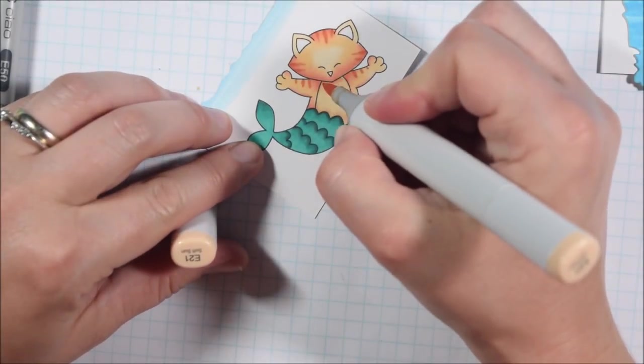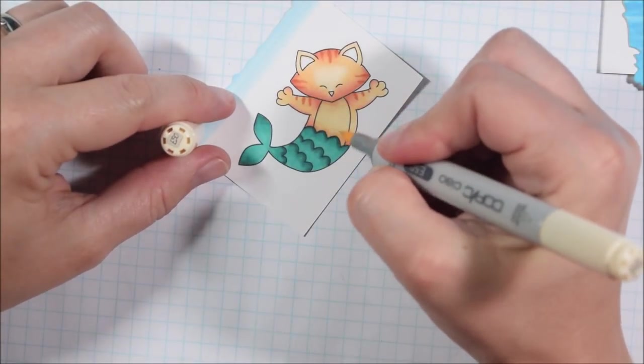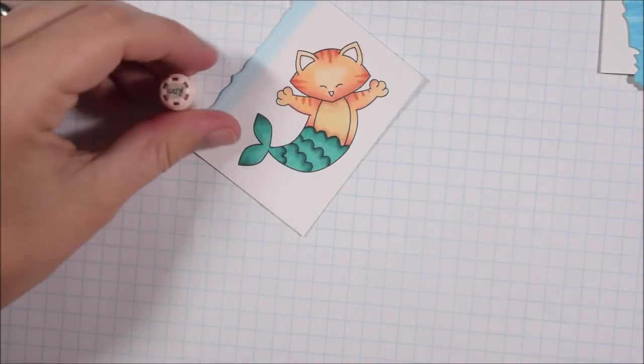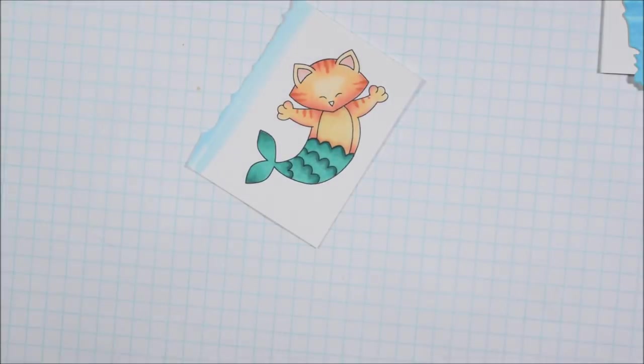Then I used some E21 and E50 to create a little bit of color on the tummy and there again I just created a shadow on the top and bottom. It's mostly a drop shadow from where his head meets his body and from where his tail meets his body.